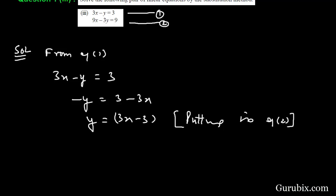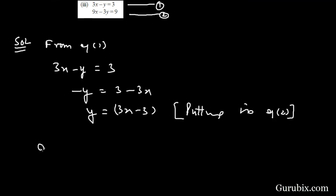The equation is 9x - 3y, and what is the value of y? That is 3x - 3, equals to 9.